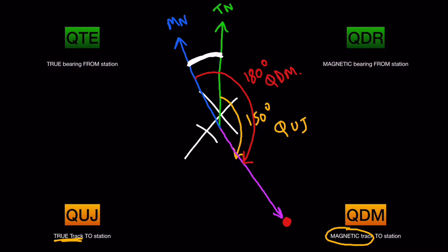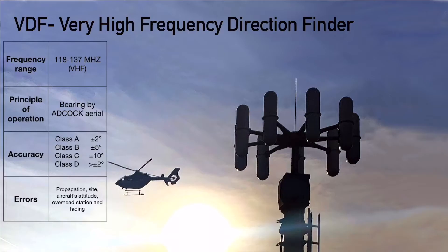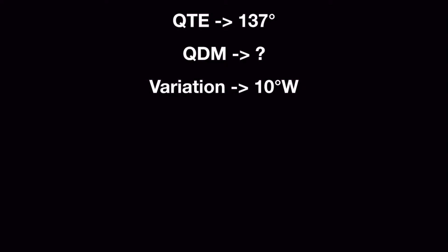These four Q codes are very important and will be used in all numericals — NDB, VOR, or anything else. For the exam, from this chapter you can get questions on the four Q codes, the frequency range (which is VHF), the principle of operation, the accuracy (for example, a Class B VDF is plus or minus five degrees), and errors such as propagation, site, attitude, and fading errors.